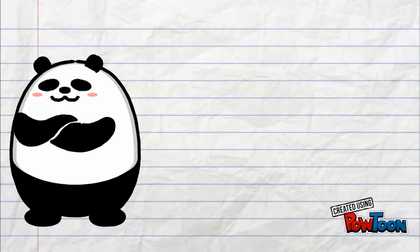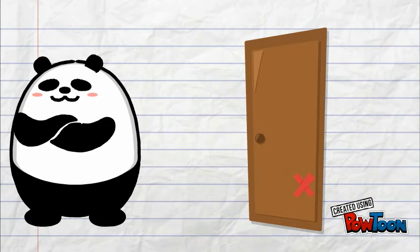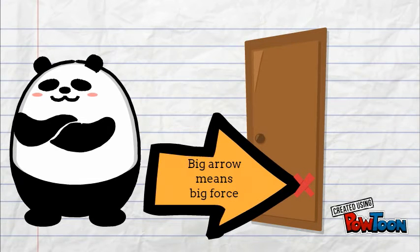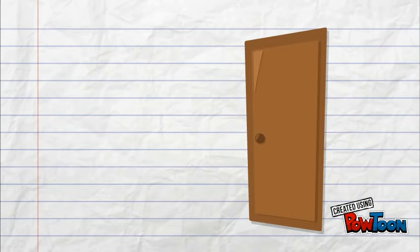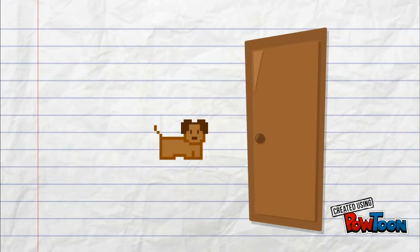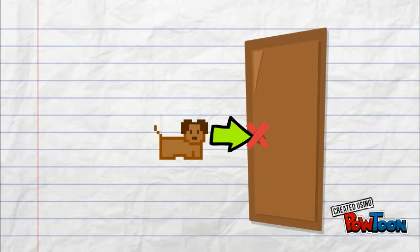Now imagine you're trying to open a door by pushing next to the hinges. From experience you probably already know that you need to use quite a lot of force, because the door is acting as a short lever. Now imagine opening a different door — like this dock, which is floating for some reason — using the door handle. Obviously you need a much smaller force, because the door is now acting as a much longer lever.